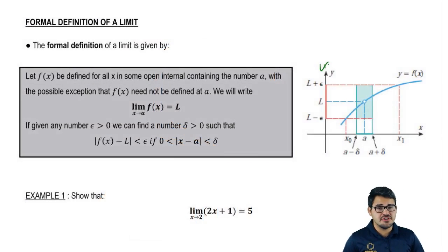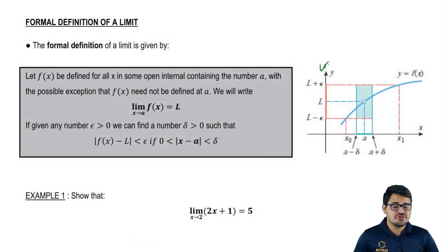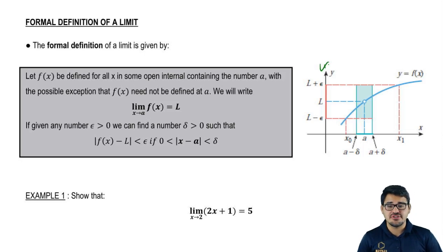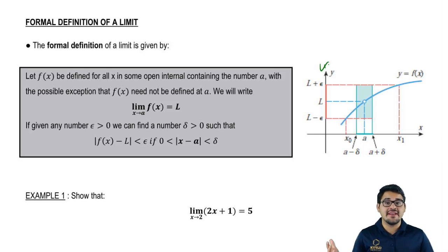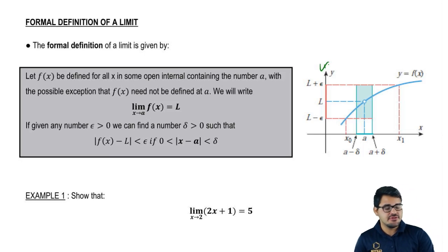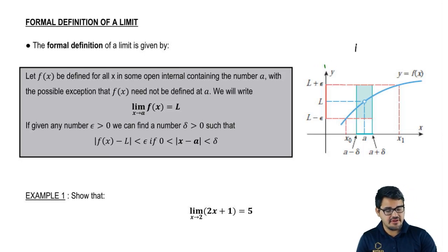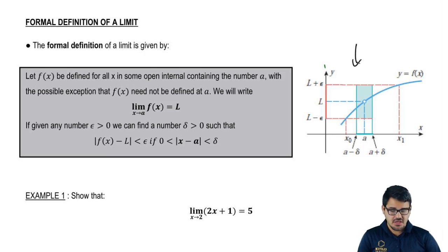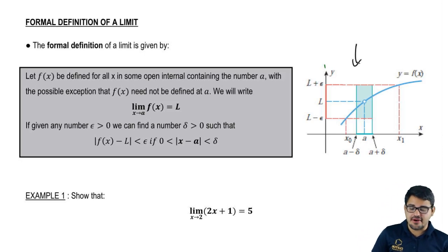Here we have the formal definition of a limit. They give you this giant paragraph with all this stuff in it — all these letters — and they just expect you to be like, it all makes sense. But we're going to go through it, break it down, and using the aid of this graph right here on the right, we're going to make some sense out of it. So let's go ahead and start reading this paragraph.